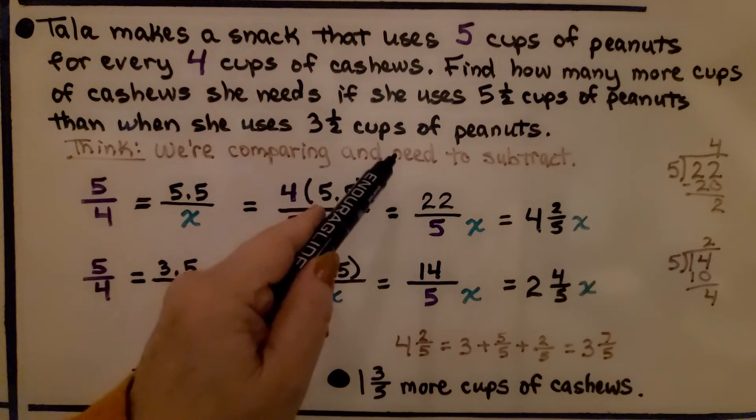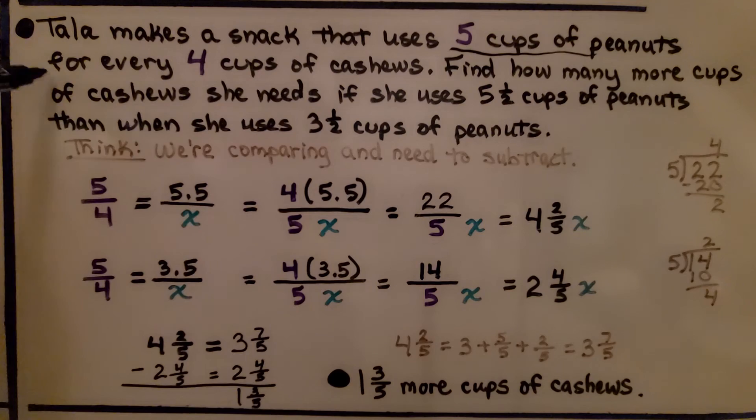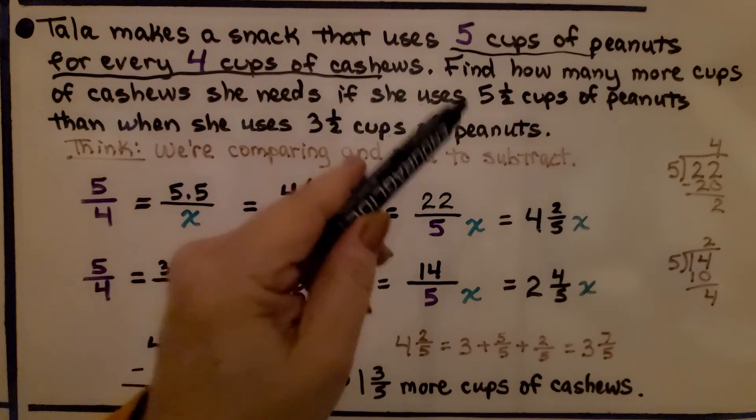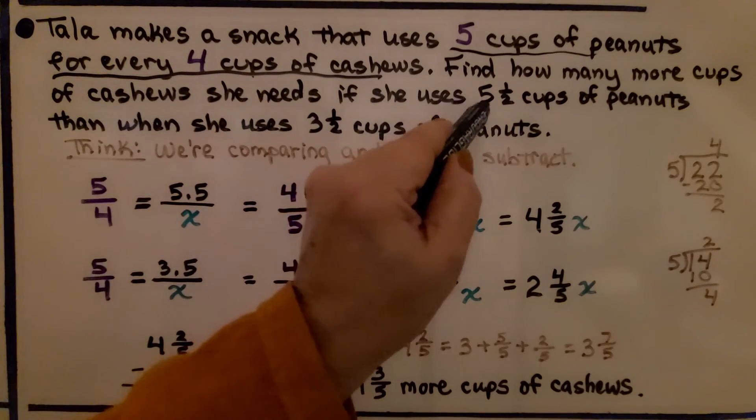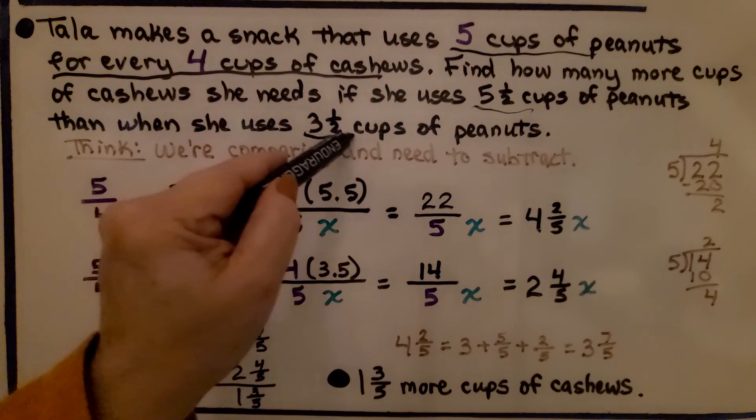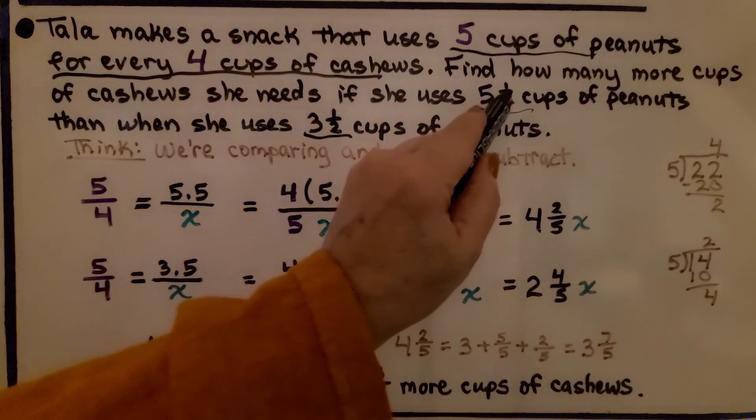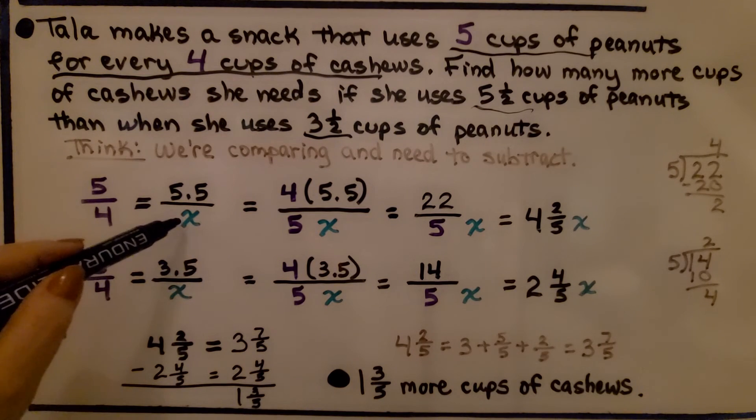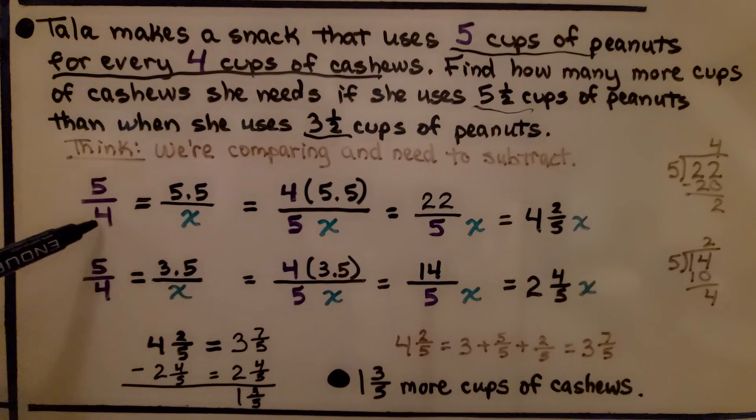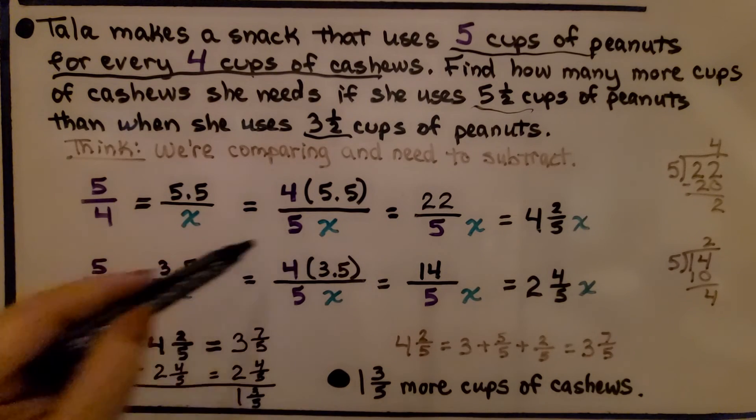We're going to need to subtract. It's giving us 5 cups of peanuts for every 4 cups of cashews, but then it wants to know the difference of the amount of cashews when peanuts are 5 1/2 cups compared to when they're 3 1/2 cups. So we have 5 to 4 for our peanuts to cashews, and we have 5 1/2 cups of peanuts, so I'm going to use a decimal 5.5 for the amount of cashews, which would be x.